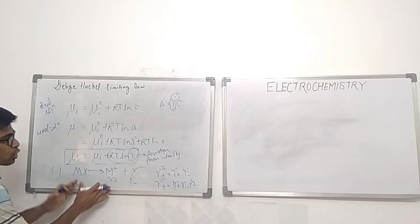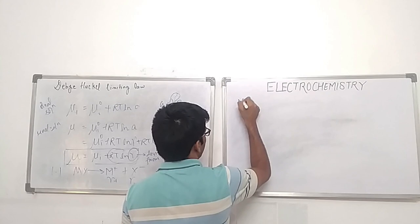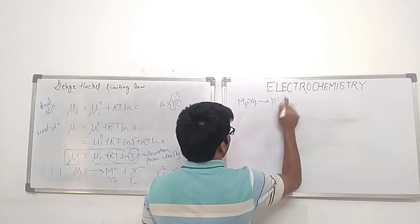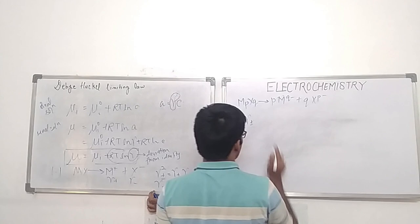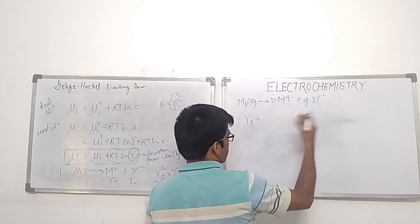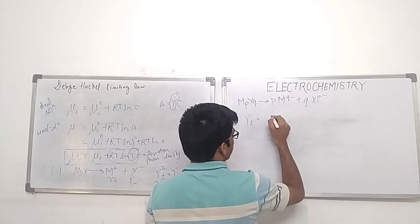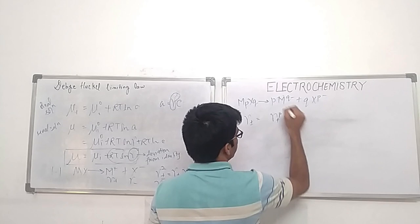In the case of a non-univalent electrolyte MₚXq, which dissociates to give p times Mq⁻ plus q times Xp⁻, the mean ionic activity coefficient becomes γ± = (γ₊ᵖ · γ₋ q)^(1/(p+q)), where the coefficients are not 1 for both the cation and the anion.